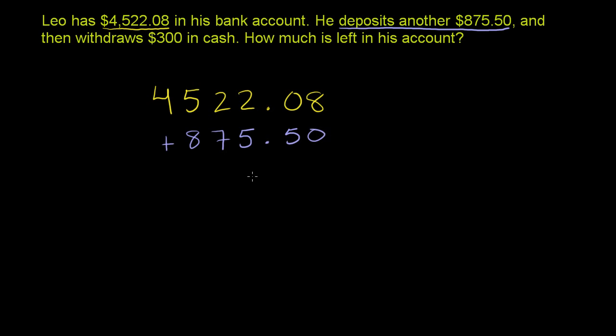When you deposit into an account, you're putting something into the account, or you're adding to the account. So after he adds that $875.50, what does he have?